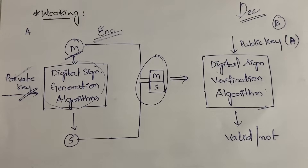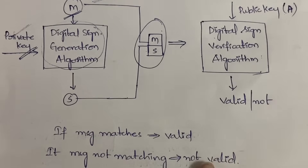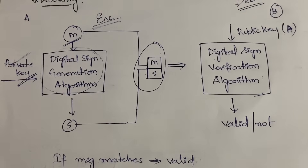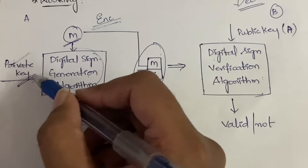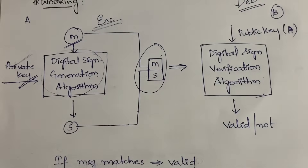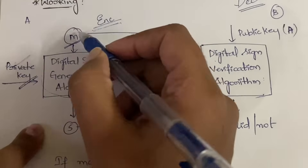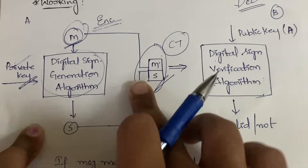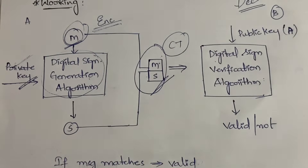The verification algorithm outputs whether the signature is valid or not. If the message matches the original message sent from the source, it is valid; if it does not match, it is not valid. In the generation algorithm the inputs are the plain text and the private key. In the verification algorithm the inputs are the combined message plus signature and the public key. If matching — valid; if not matching — not valid.